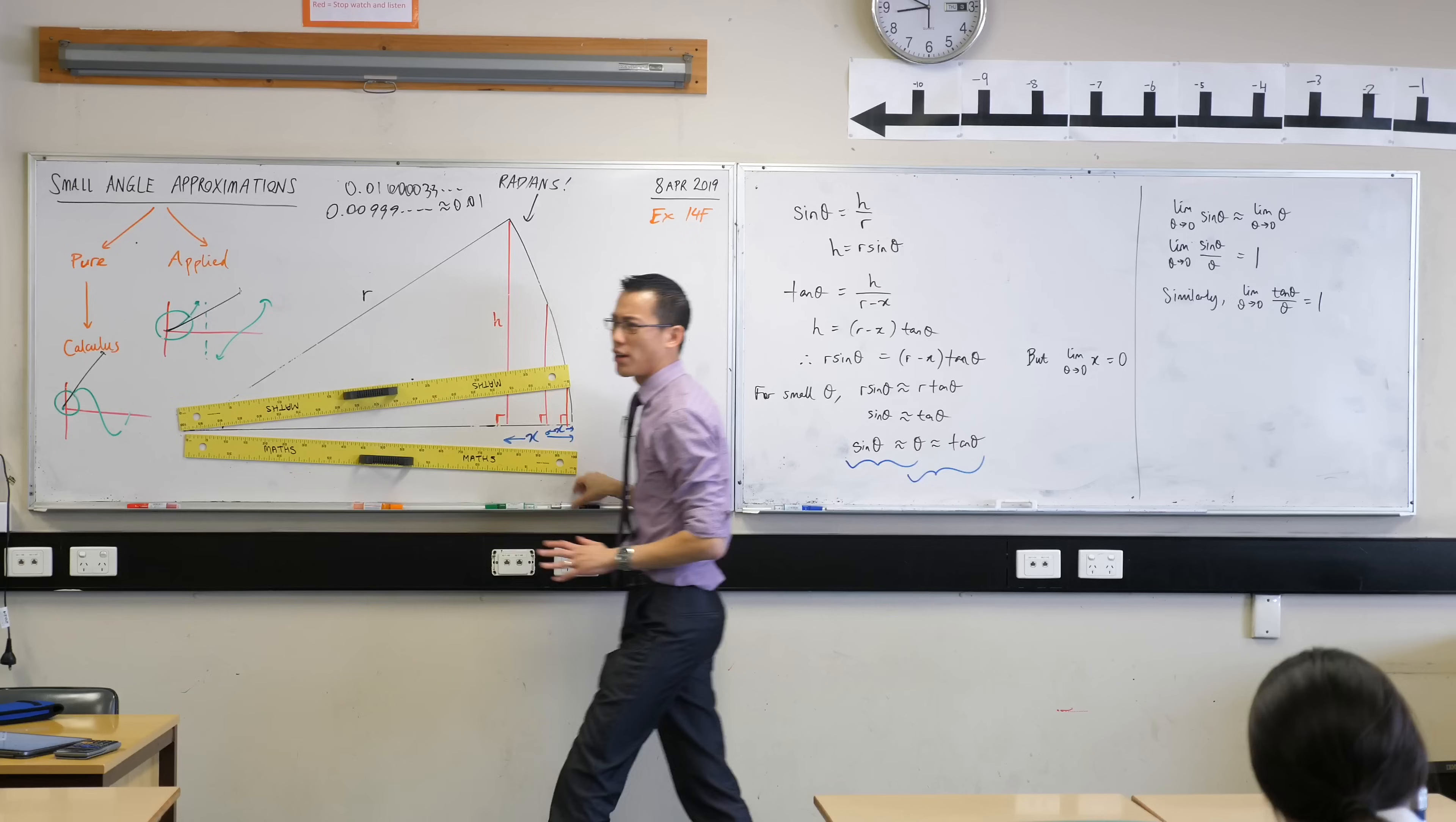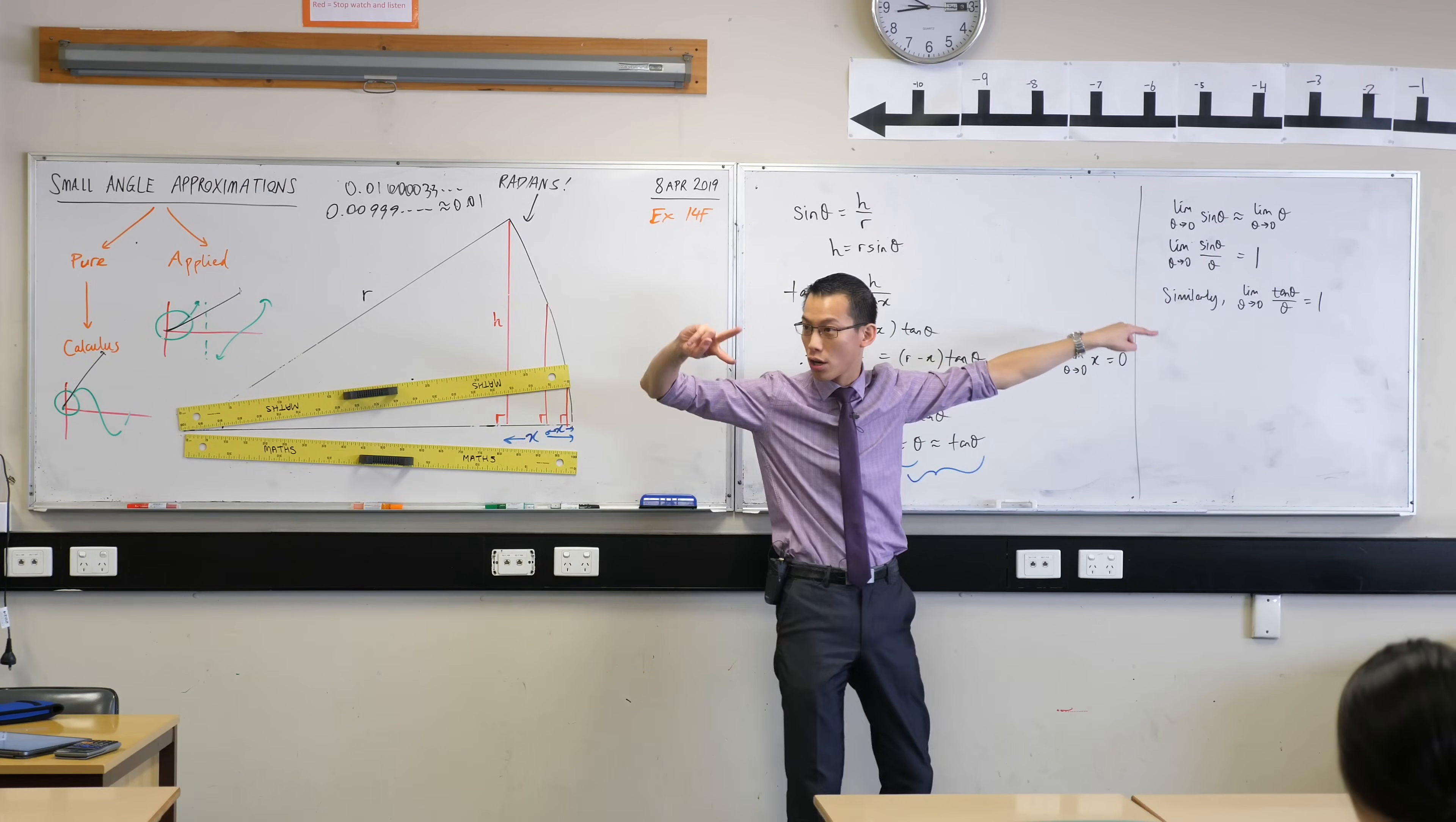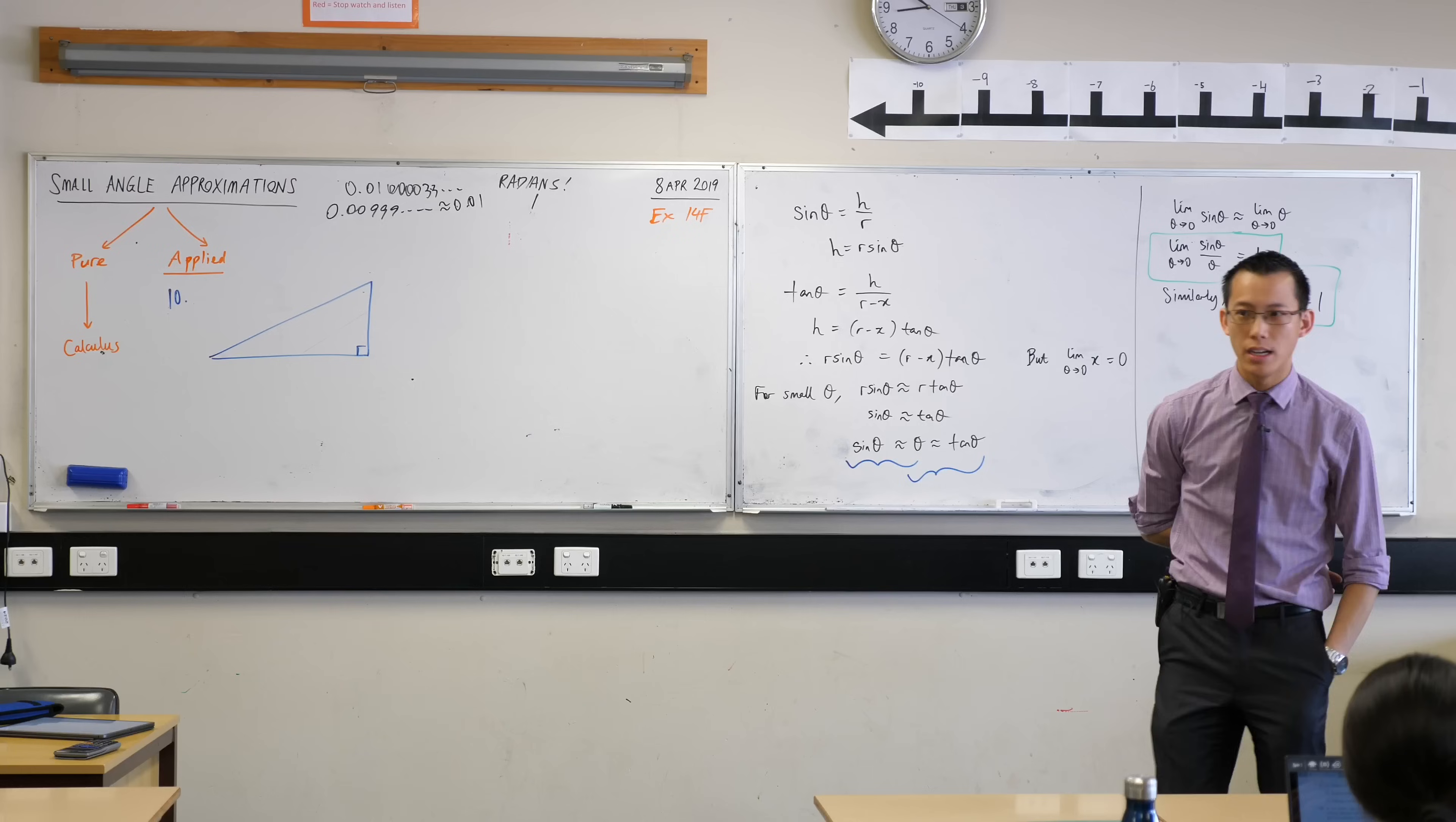Do you see it doesn't take that much imagination to realize you're going to get the same thing with tan? So I'm going to say similarly, the limit as theta approaches 0 of tan theta over theta also equals 1. And the last thing to note, we're not even going to write this down because it's so trivial, but hopefully you can see it. 1 is a useful number when it comes to reciprocals or ratios like this, because 1 is its own reciprocal. So I could just as easily say theta on sine theta, or theta on tan theta. Does that make sense? So this is the actual result.